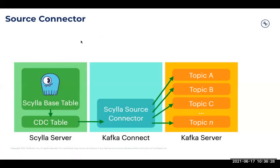Here is the canonical architecture diagram for Kafka Connect, for the Scylla source connector. You've got the Scylla server in green, the base table, and then the CDC table, which we've just talked about how that works.